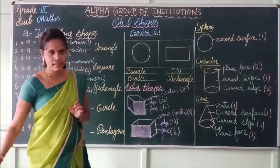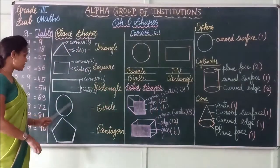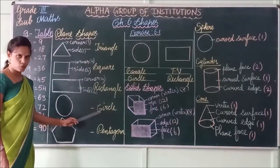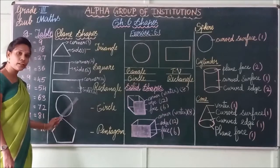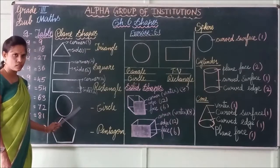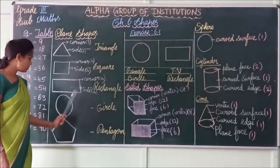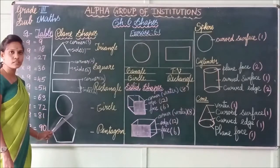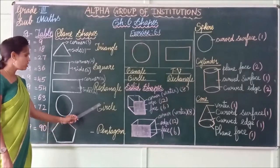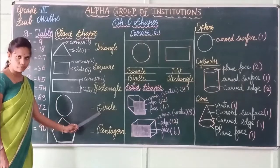Now we move on to the next shape. What shape is this? Circle. Here we don't have any corners. This shape is drawn using curved lines. So this is called a circle.